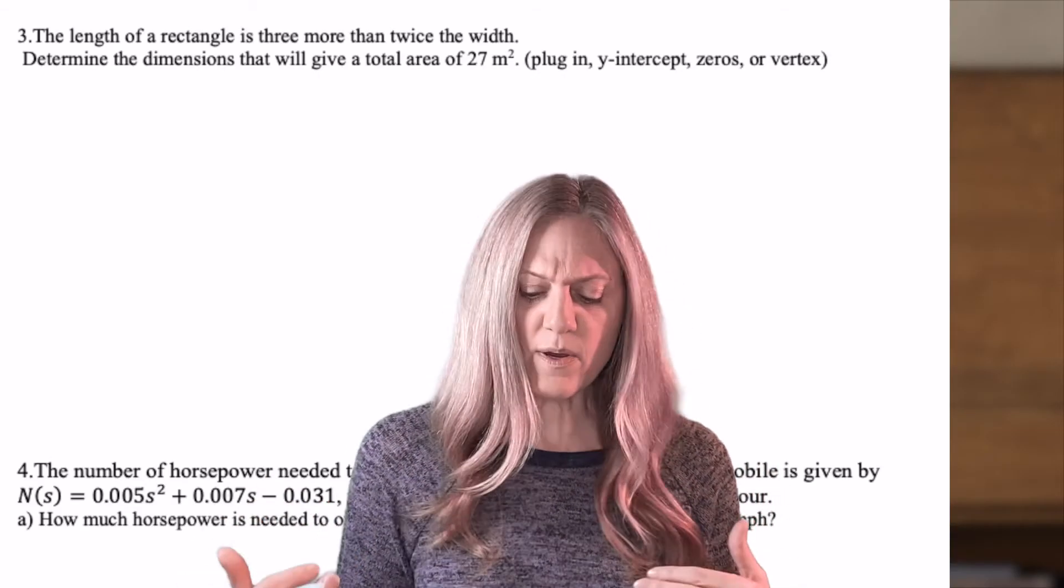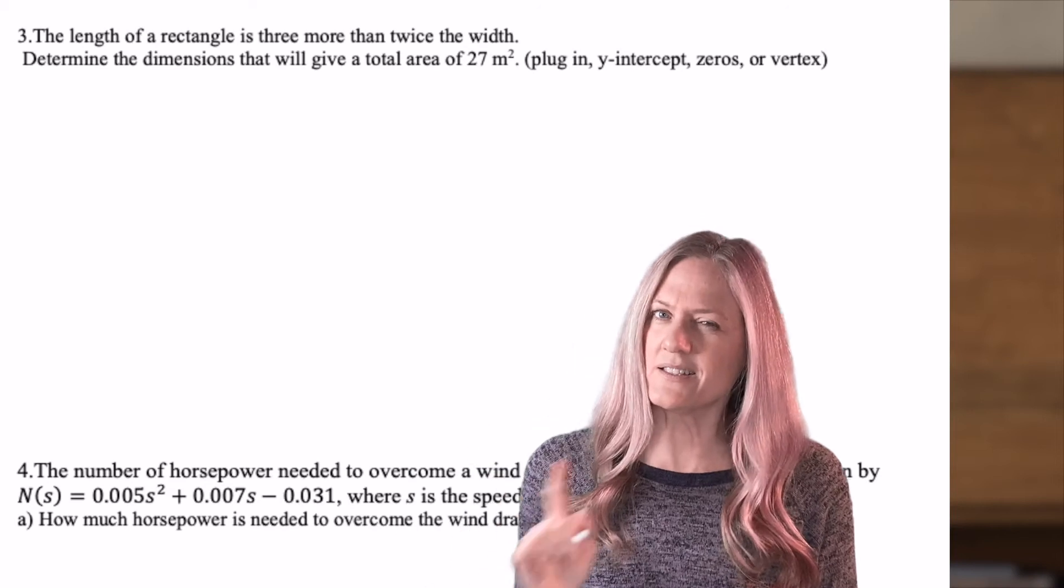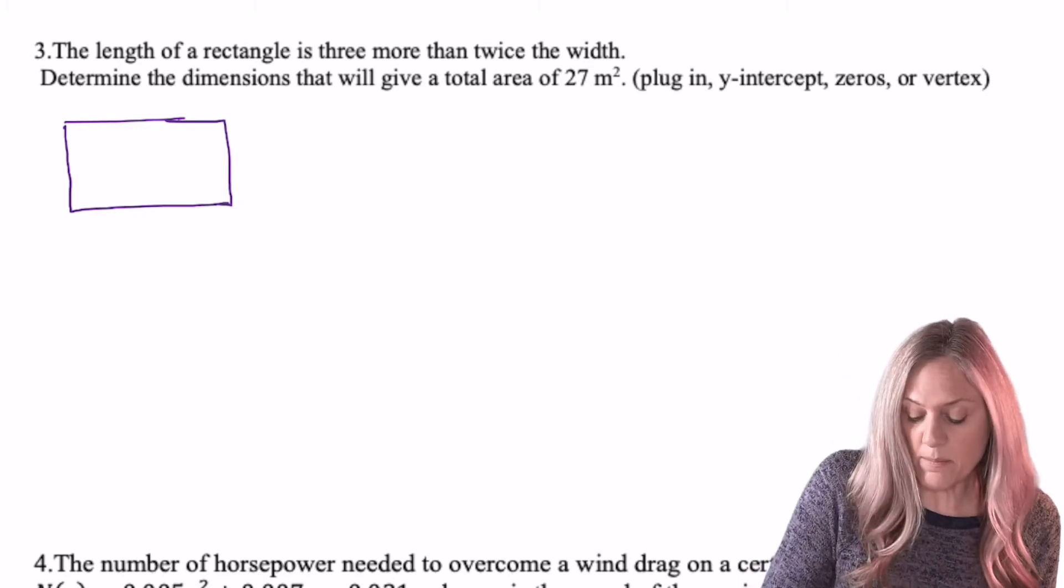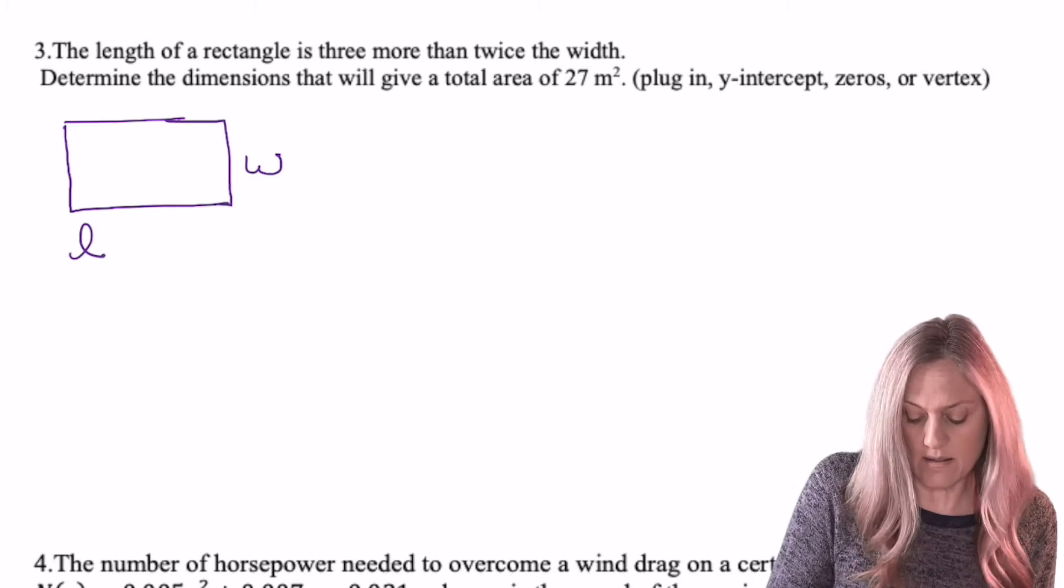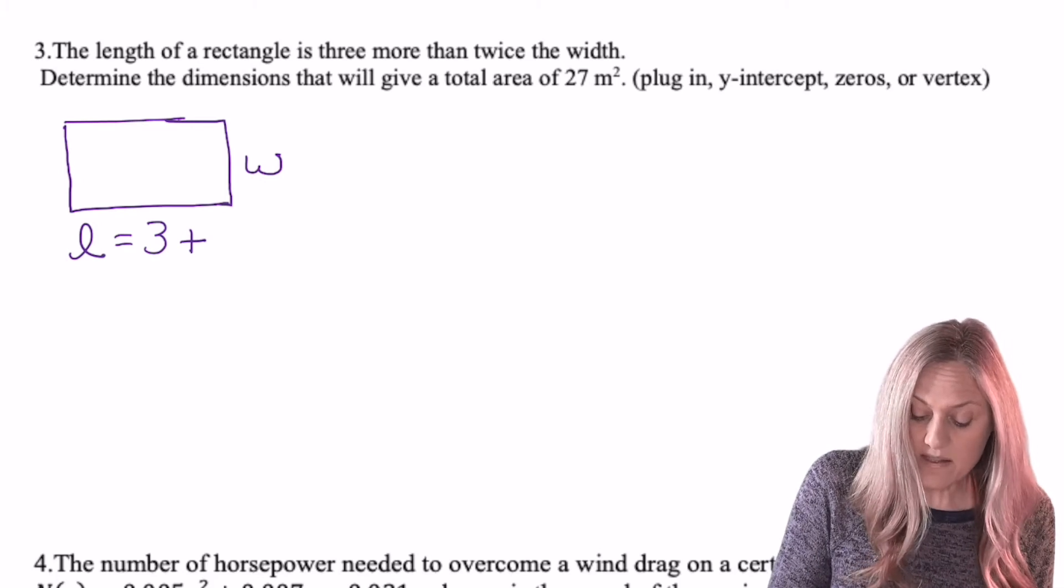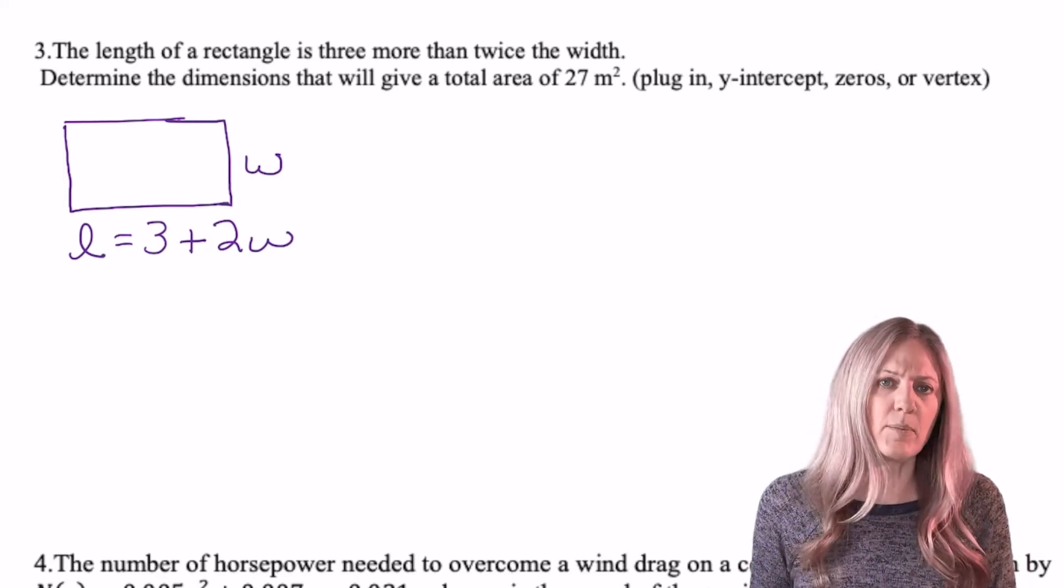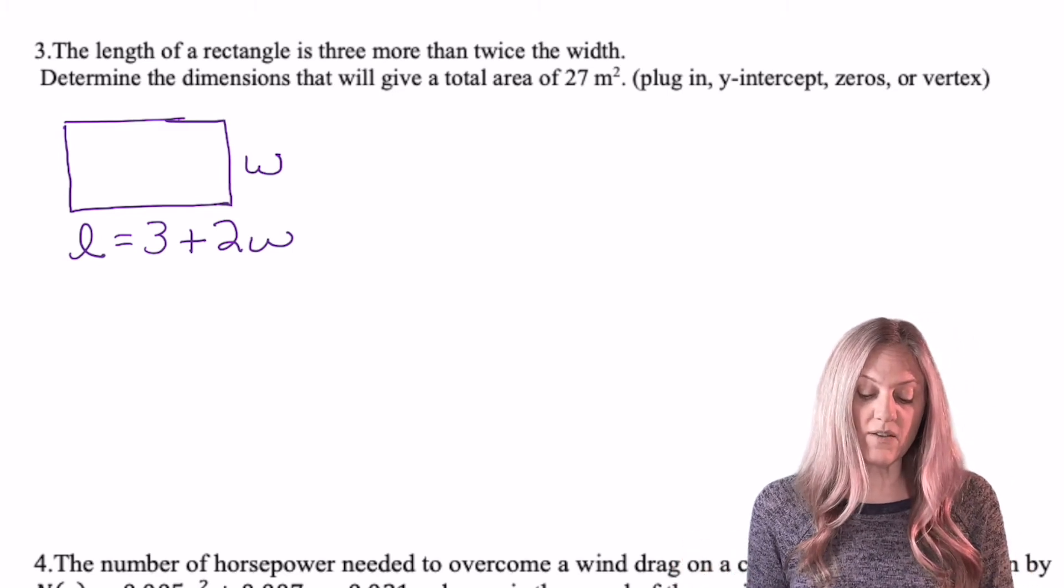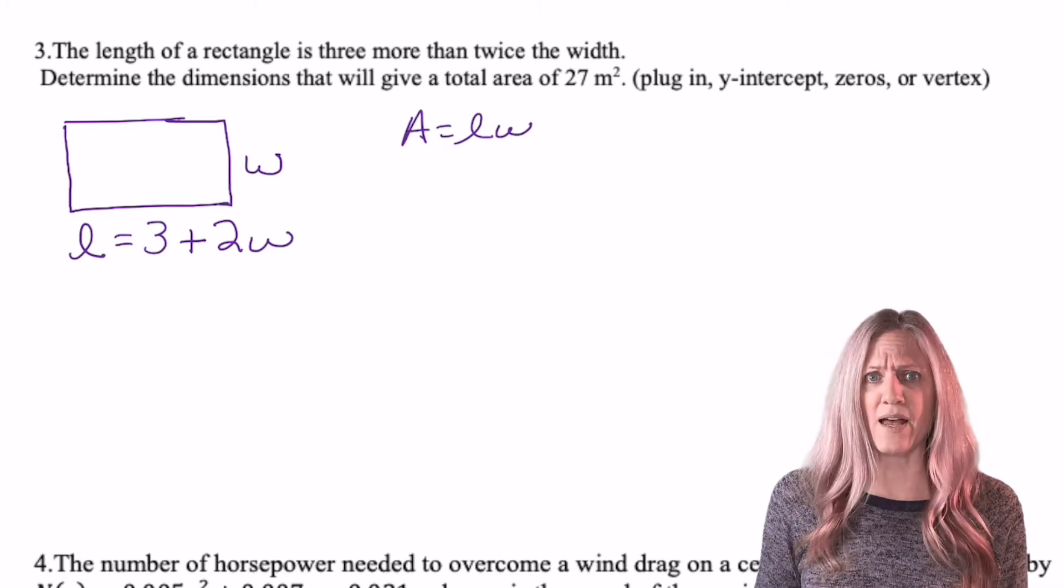The length of a rectangle is three more than twice the width. At first read, what are we doing here? Quadratics? Let's take a closer look. I have my rectangle and the length is described in terms of the width. So I'm going to mark the width as w, but then the length is equals three more than, more than add, twice the width. So two times w. Good thing because I don't want to have two different variables that I'm working with.